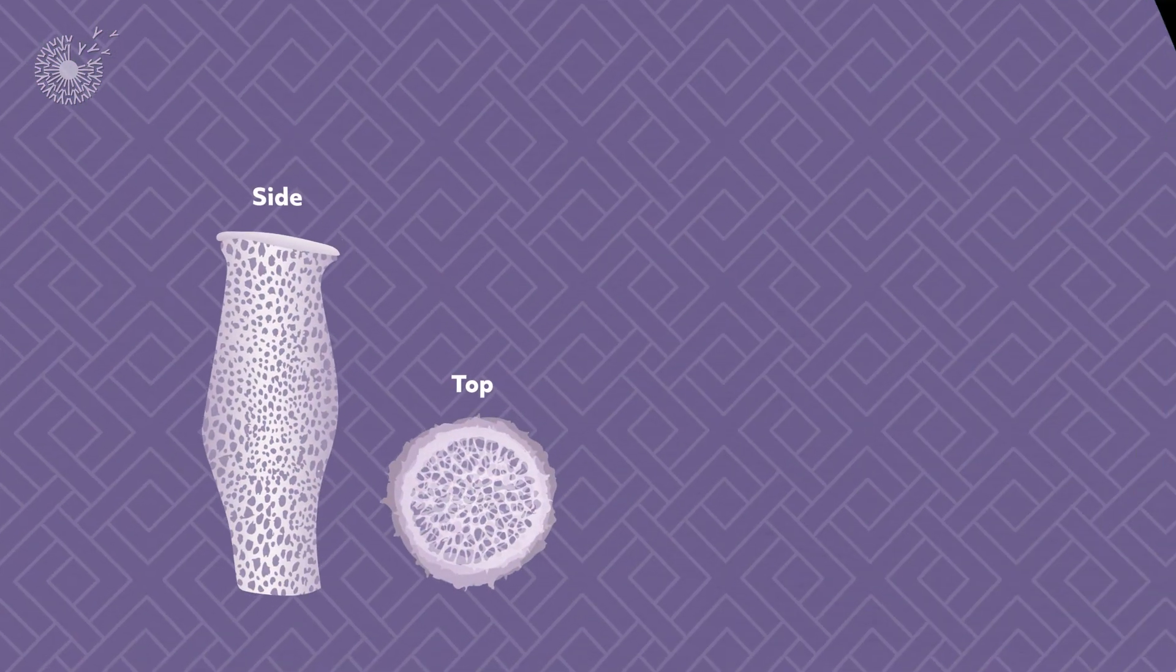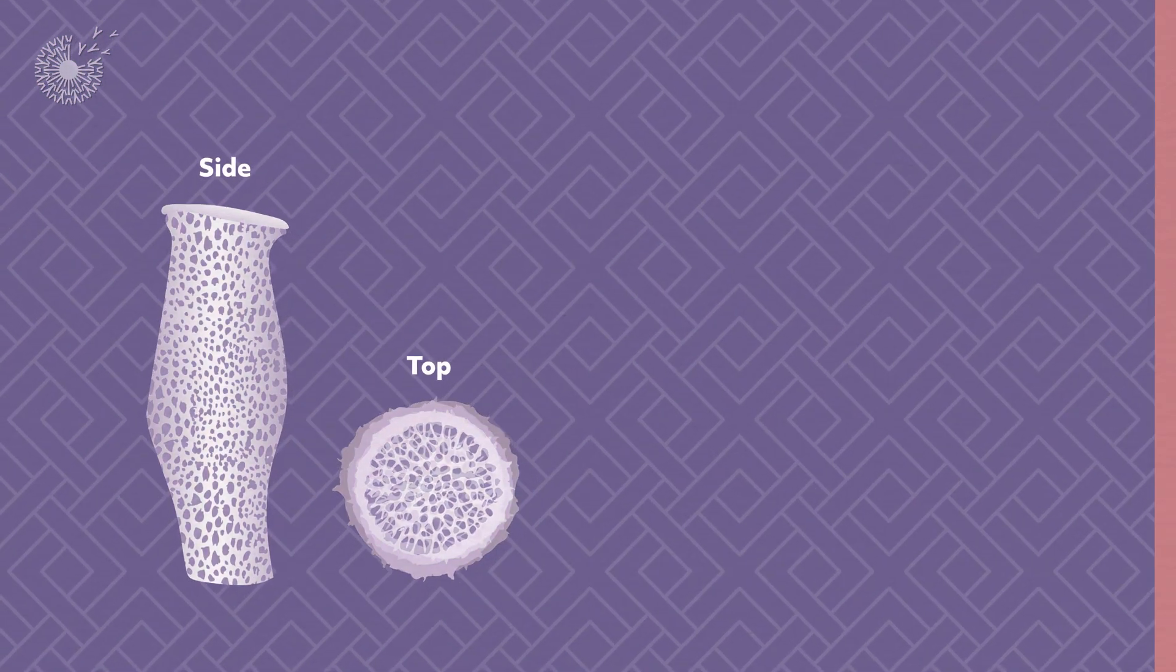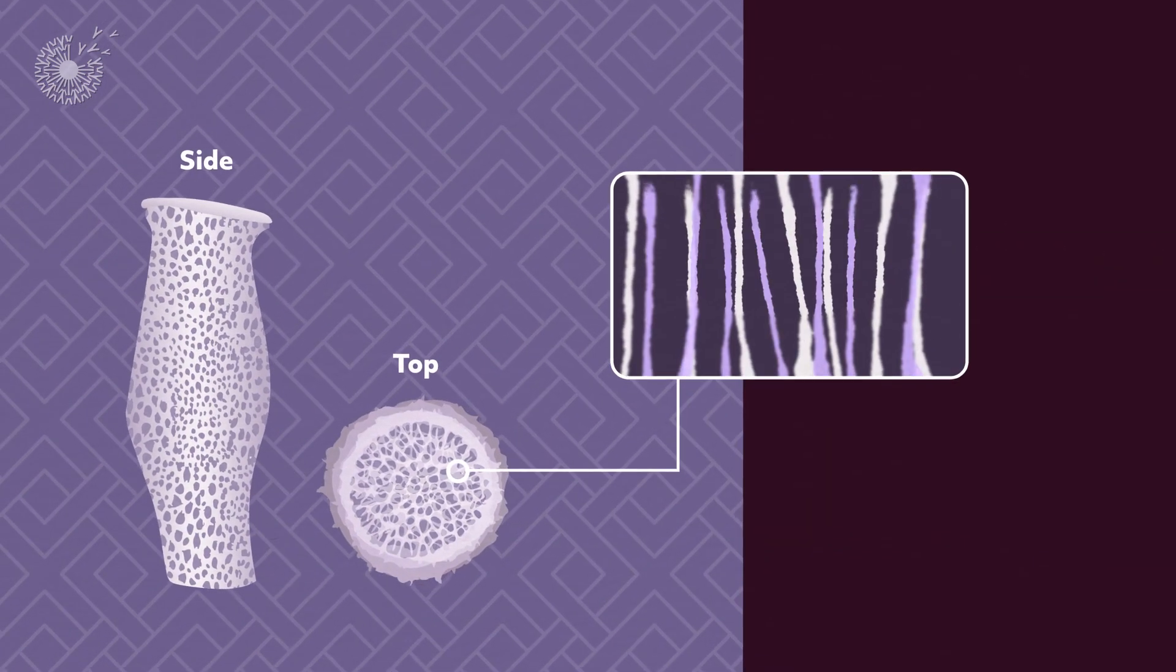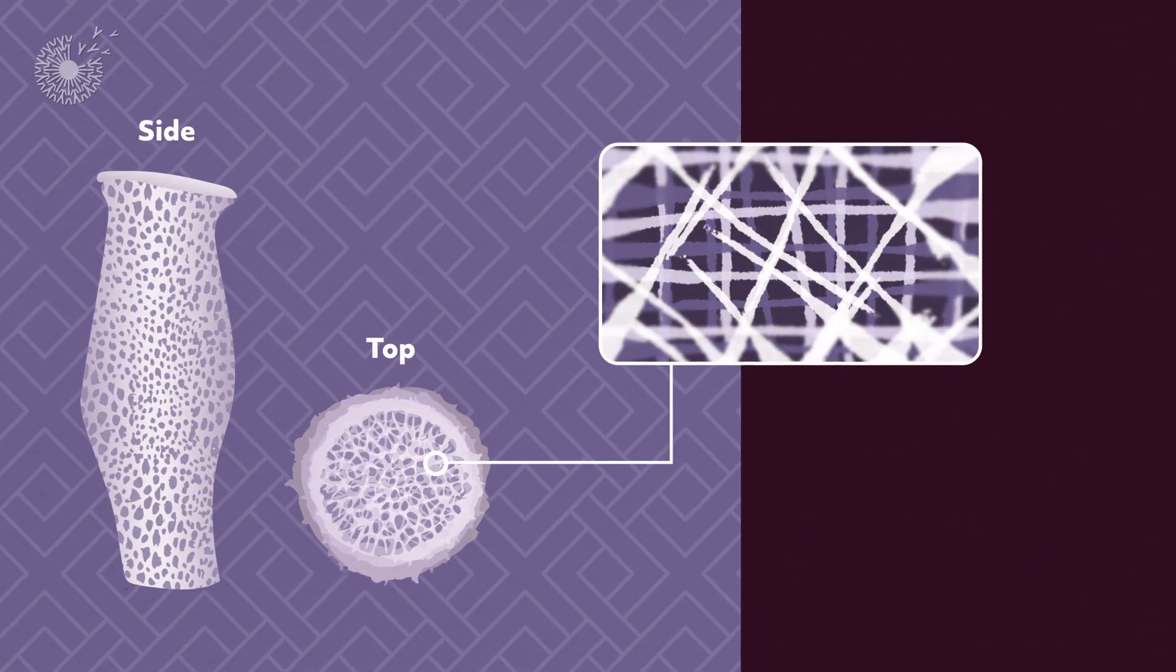Let's take a closer look at the Venus flower basket skeleton. It's a tube made of glass that is built up from vertical, horizontal, and diagonal struts.